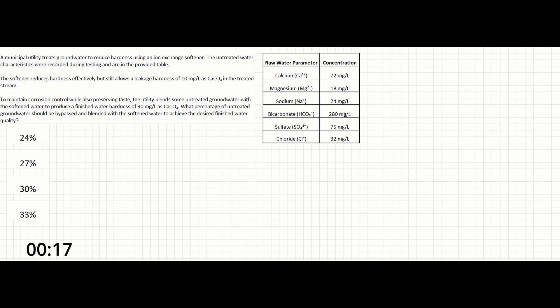The softener reduces hardness effectively, but still allows a leakage hardness of 10 mg per liter as CaCO3 in the treated stream. To maintain corrosion control while also preserving taste, the utility blends some untreated groundwater with the softened water to produce a finished water hardness of 90 mg per liter as CaCO3.